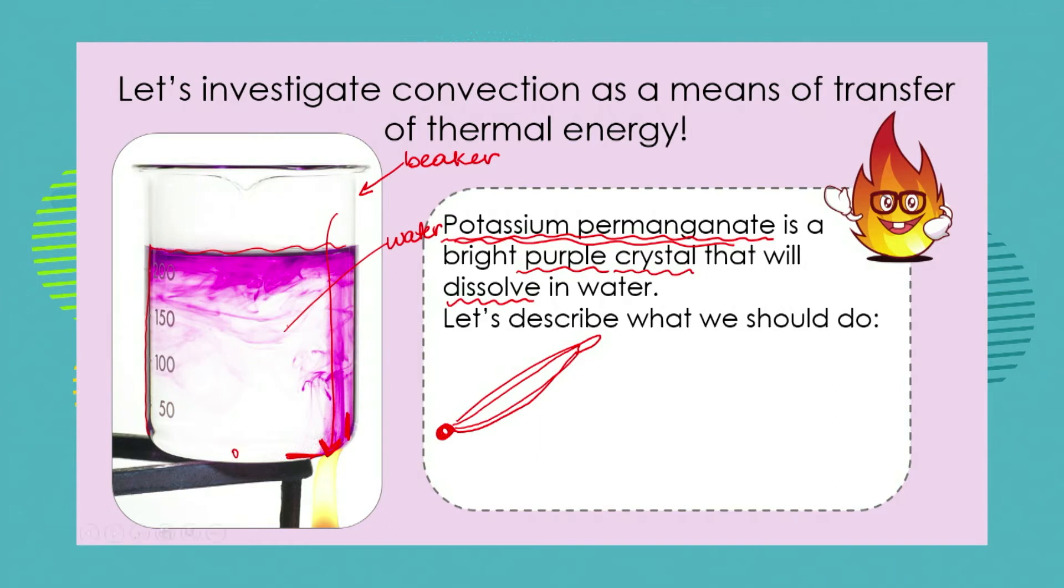In other words not here in the middle. We're then going to introduce a heat source from a Bunsen burner, from a candle or from a gas burner right directly underneath our purple crystal of potassium permanganate. So that's what we should do.